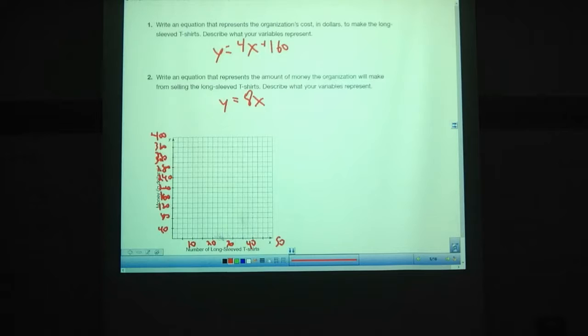So, when we sold 20 shirts, we had to pay $240 for those shirts. We sold 50 shirts, we were paying $360 for those shirts. And our y-intercept in that equation is $160. So, we can get three points there. I'm going to graph it with thin lines because we want it to be as precise as we can.